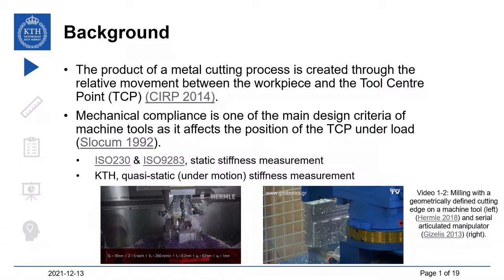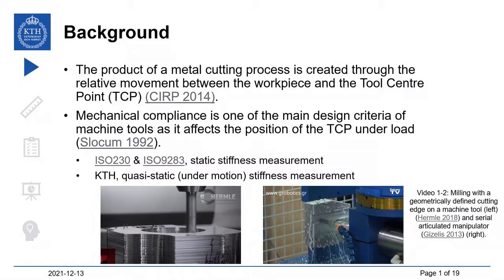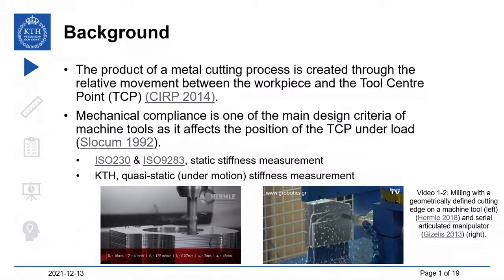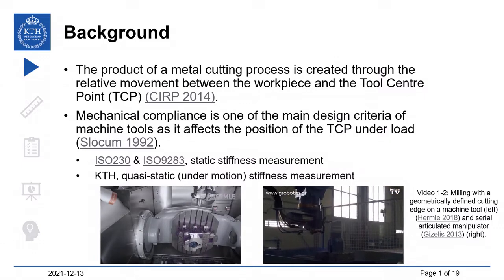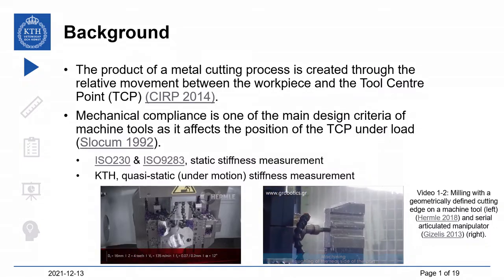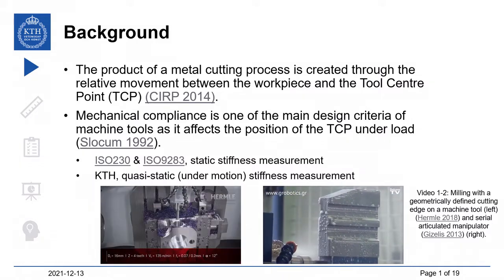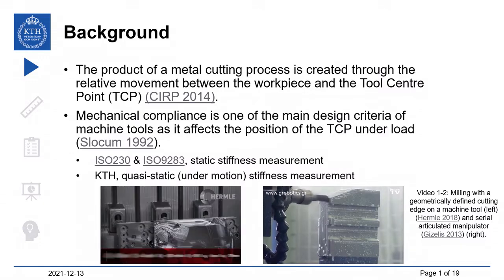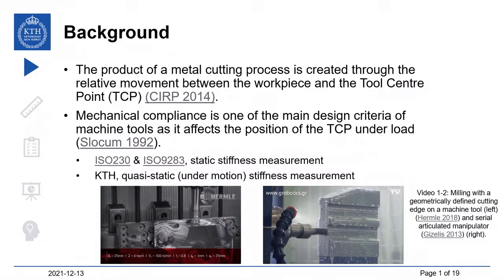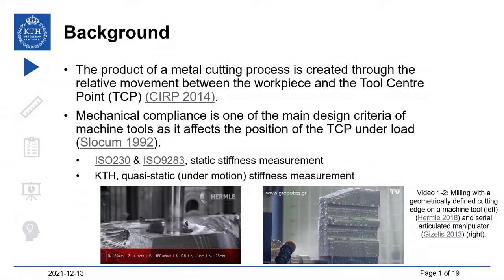Background. The product of a metal cutting process is created through the relative movement between the workpiece and the tool center point. Videos 1 and 2 show examples of milling — a metal cutting process with a geometrically defined cutting edge — for a machine tool on the left-hand side and for an industrial manipulator on the right-hand side. Mechanical compliance is one of the main design criteria of machine tools, as it affects the position of the tool center point under load. To experimentally determine mechanical compliance, one can resort to the guidelines provided by ISO 230 or ISO 9283, which provides a static stiffness measurement. However, the department for production engineering at KTH proposes quasi-static stiffness measurement, that is, under slow movements of those systems.